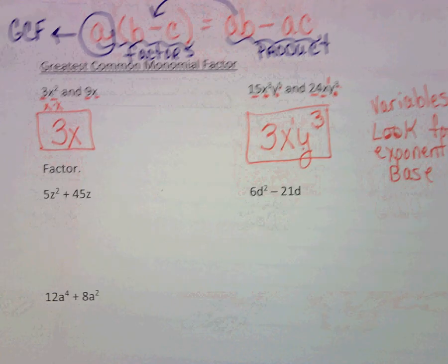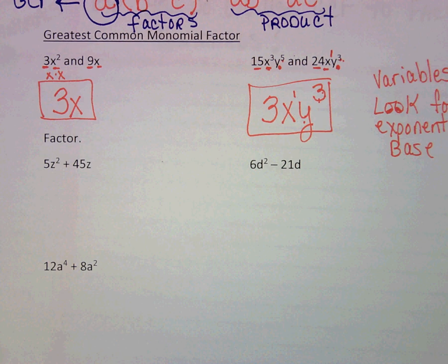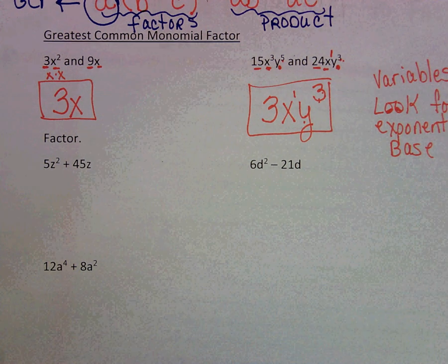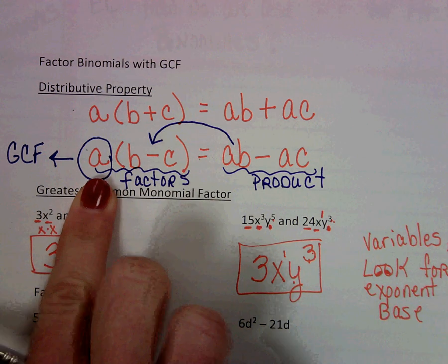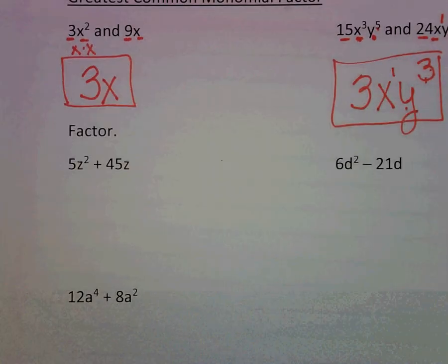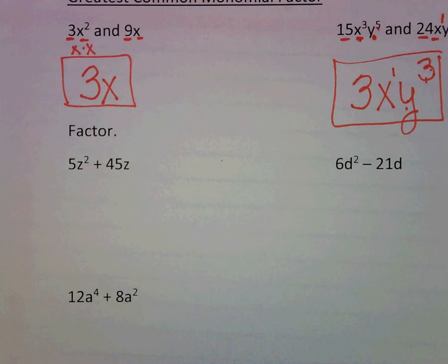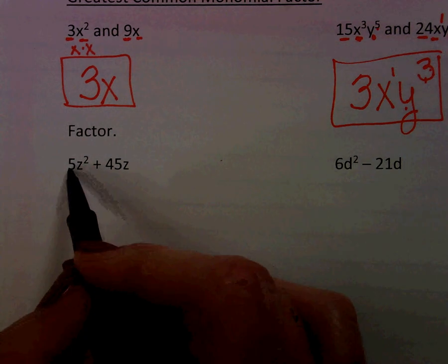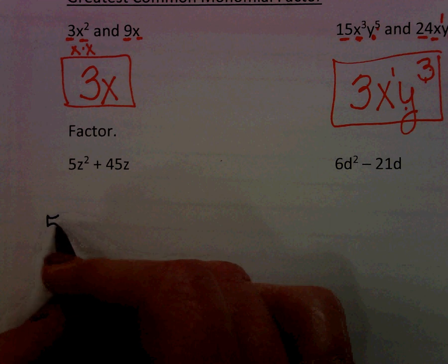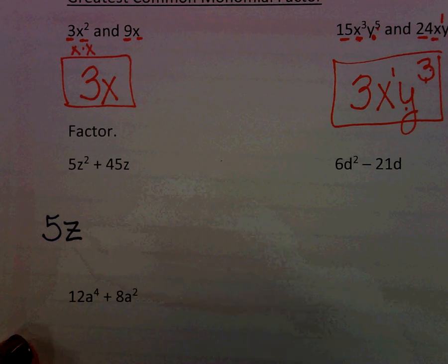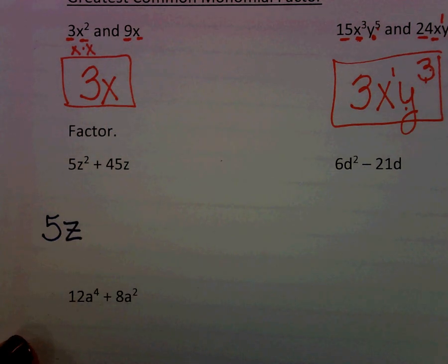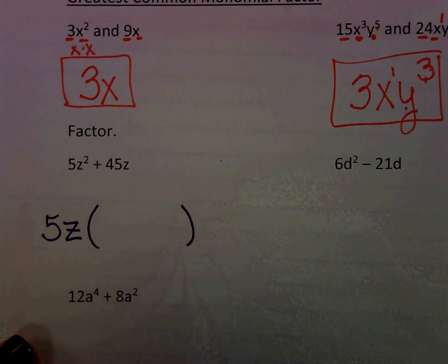So now, how do we use the greatest common factor, our greatest common monomial factor to factor this? Remember, we're working from the product backwards to the factors. Here's our first factor, 5z squared plus 45z. The first thing we have to realize is what is our greatest common factor. Between my 5 and my 45, 5 would be my GCF. Z squared and z, they have 1z in common. So that is my GCF that we're going to write on the outside.